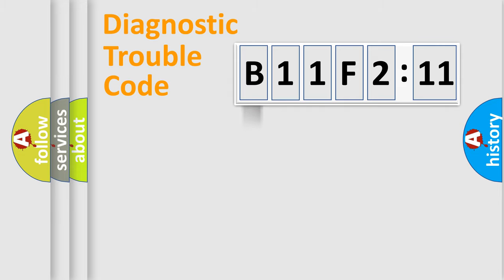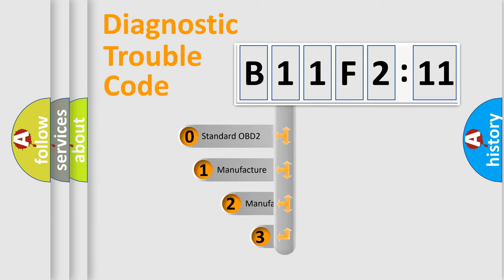Powertrain, Body, Chassis, Network. This distribution is defined in the first character code.